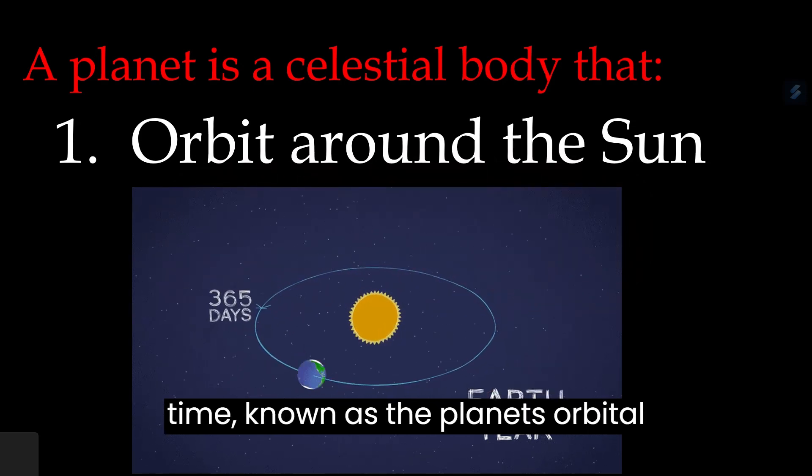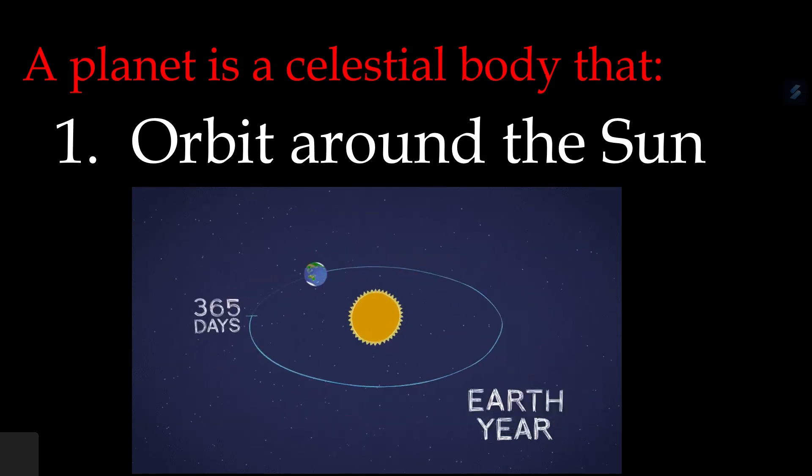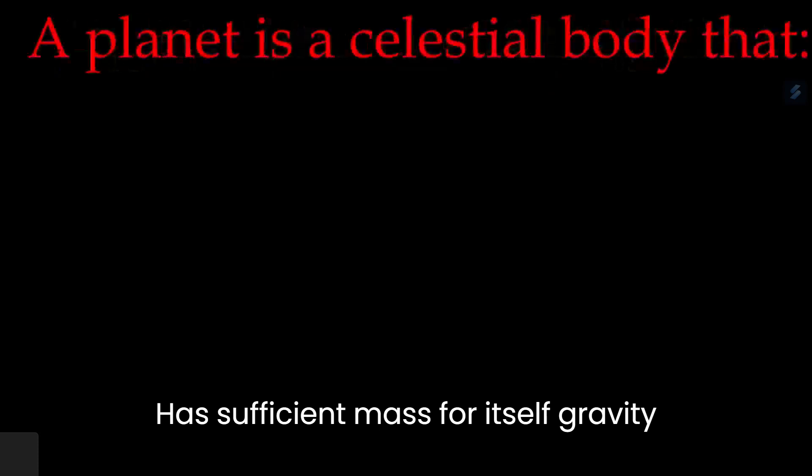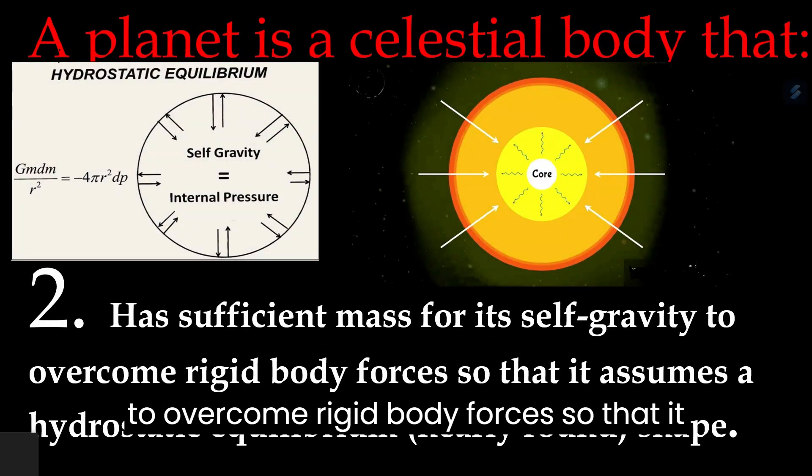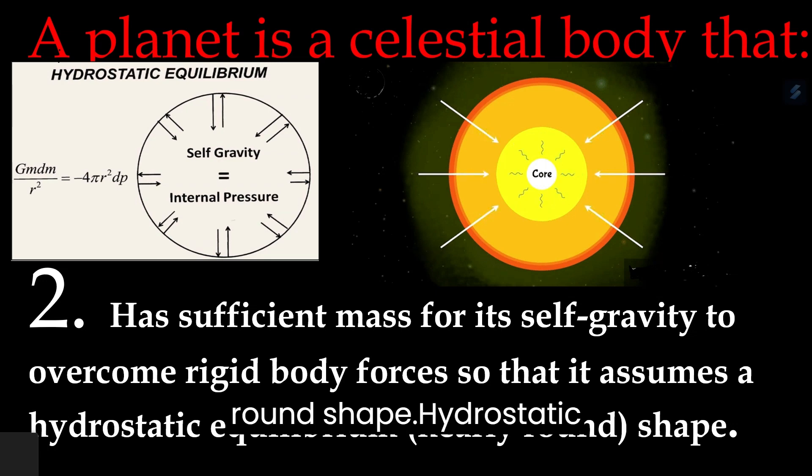The second definition is: a planet is a celestial body that has sufficient mass for its self-gravity to overcome rigid body forces so that it assumes a hydrostatic equilibrium, nearly round shape.